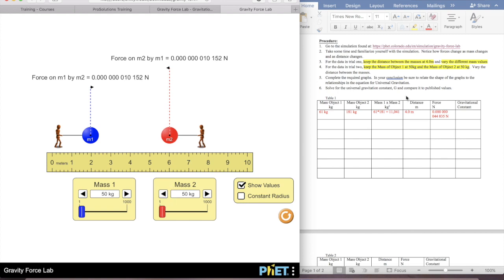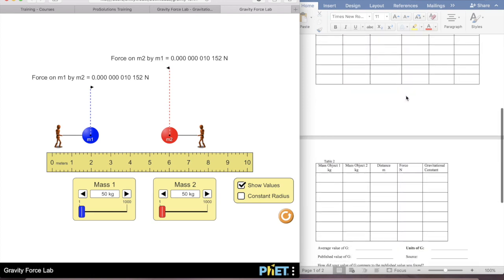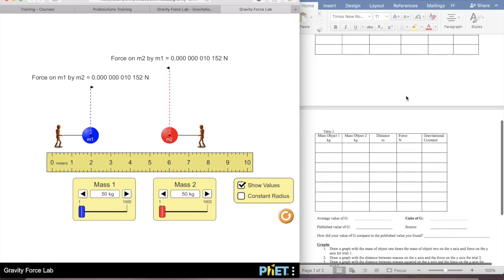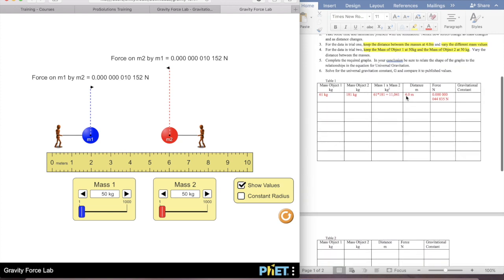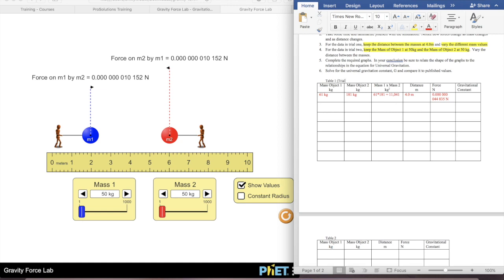So now I've got them both at 50 and then, so this is a table one is what they call trial one. So you'll just do, you'll keep your distance all the time at four, and then you'll just change the mass values.